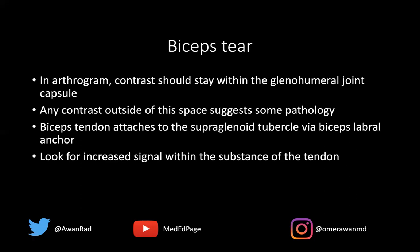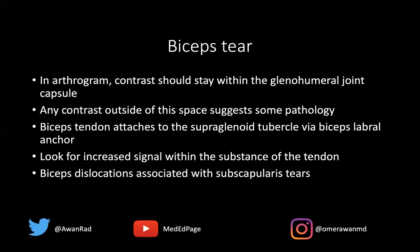You always want to look for increased signal in the substance of the tendon — that manifests as a tear. You also want to make sure the biceps tendon is not dislocated. Normally, the biceps tendon sits in the bicipital groove between the greater and lesser tuberosity, and it can often be dislocated from that groove. Biceps dislocations are associated with subscapularis tears — this is an ABR favorite on the core exam. The transverse ligament helps situate the biceps tendon in the bicipital groove, but some of its fibers come from the subscapularis tendon. So when there's a dislocation, oftentimes the subscapularis tendon tears as well.